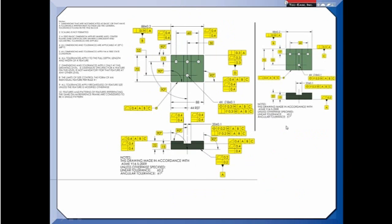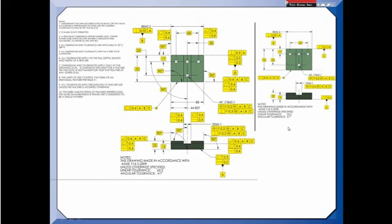You're all familiar with these linear and angular tolerances that do not relate to the datum reference frame. They allow for tolerance accumulation, we get wedge-shaped tolerance zones because of that angular tolerance, and we end up dimensioning and tolerancing points in space that cannot reproducibly be measured.